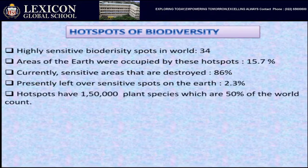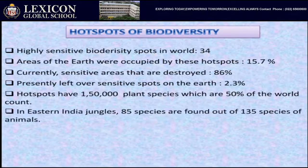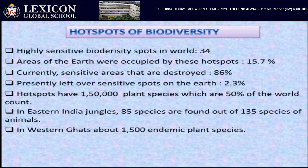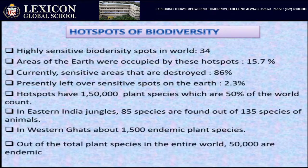In eastern India jungles, 85 species are found out of 135 species of animals — those that are rare or endangered. In the Western Ghats, about 1,500 endemic plant species are found. Out of the total 50,000 endemic plant species in the world, 1,500 are found in India.